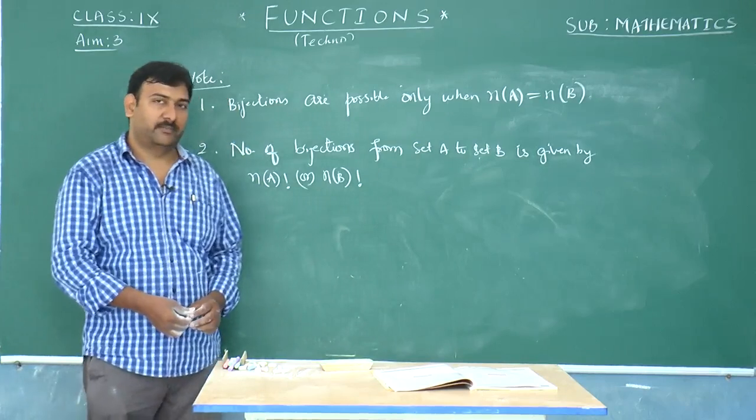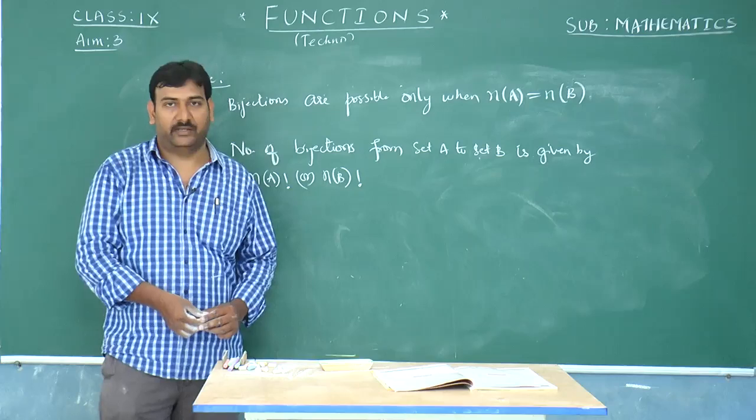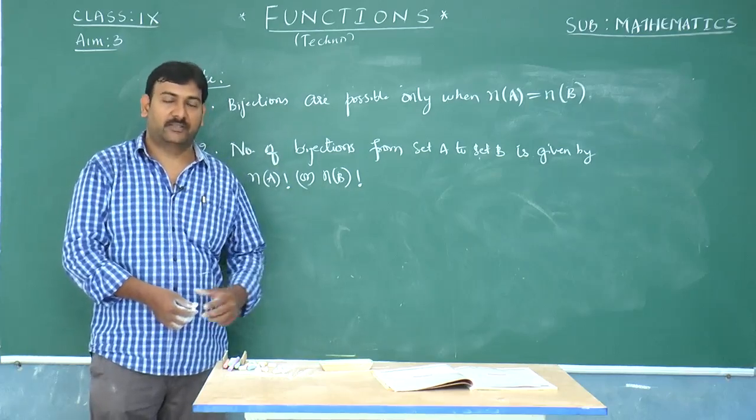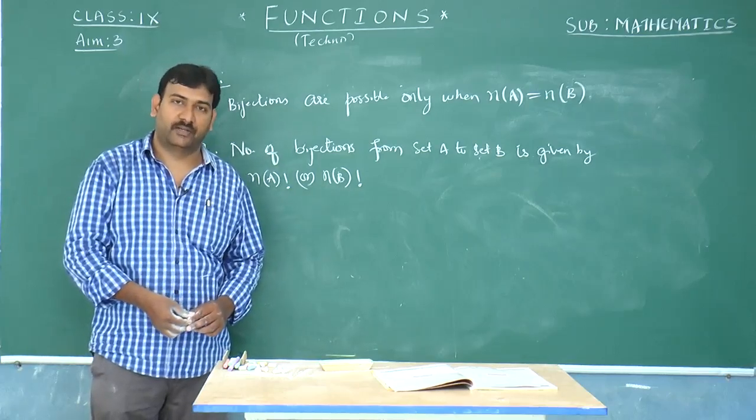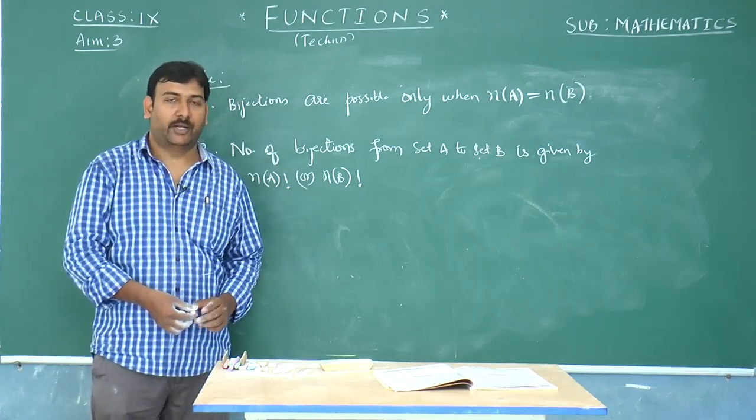This is the formula to find the number of bijections. And finally, if you want to find the number of into functions, the number of into functions is equal to total number of functions minus number of onto functions, which you can do manually.